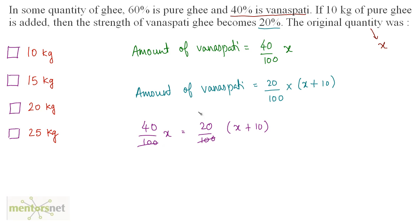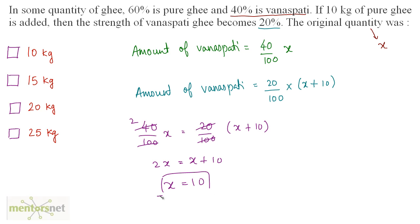The 100s cancel out, and since 20 × 2 = 40, we get: 2X = X + 10. So, 2X − X = X = 10. Therefore, the original quantity was 10 kgs.